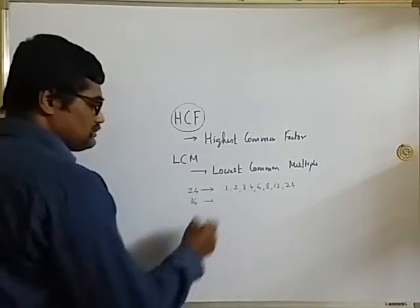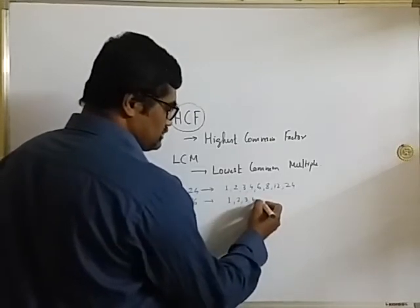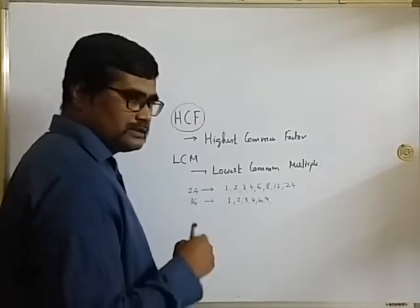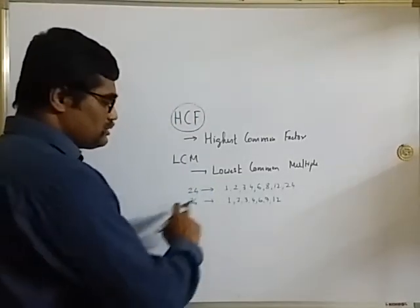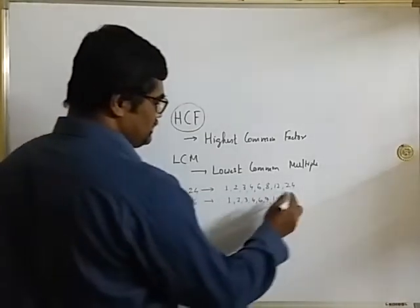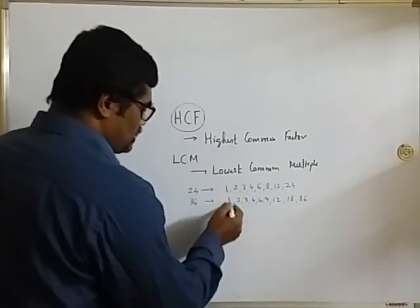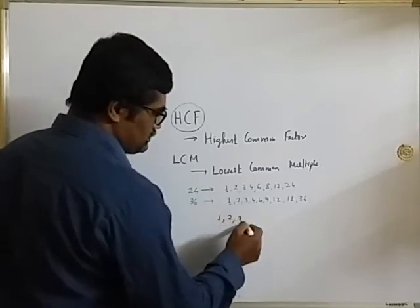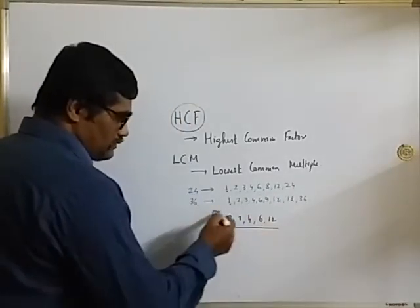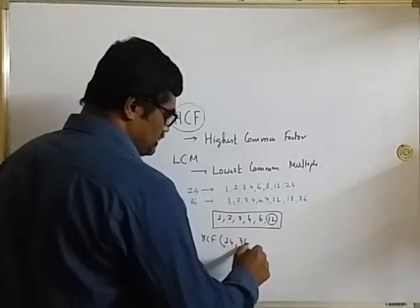Now take 36 and identify its factors: 1, 2, 3, 4 — 5 will not be there — 6, then 9 will be there, 10 and 11 will not be factors, 12 will be there. Then after 12 we get 18, and then 36. Now look at the common factors of 24 and 36: 1, 2, 3, 4, 6, and 12. Out of all these common factors, which one is the highest? 12. So HCF of 24 and 36 is 12.